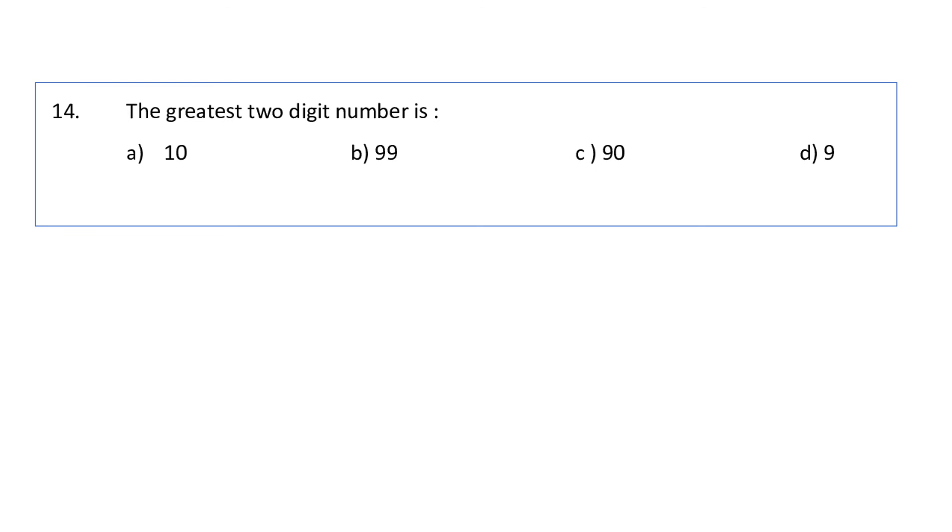Question 14: The greatest two-digit number is. We can see options A, B and C have two-digit numbers and D is 9. Among these, A is 10, B is 99 and C is 90. Here B, 99 is the greatest two-digit number which is present here, and it is also the greatest two-digit number in the number series.